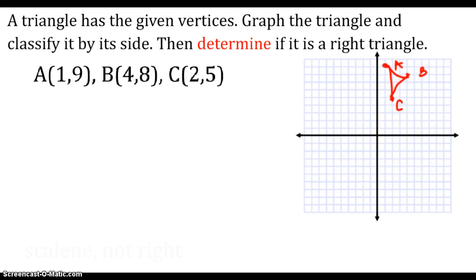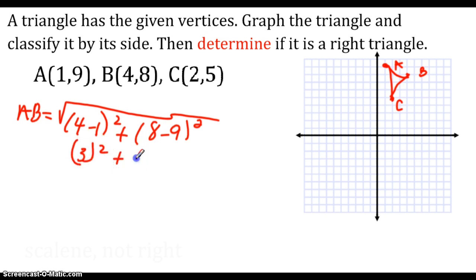Hopefully now you have your formula sheet. So if I'm going to do the distance of AB, I'm going to take 4 minus 1 squared plus 8 minus 9 squared. I'm going to get 3 squared plus negative 1 squared, which gives me 9 plus 1, and the square root of 10, which is approximately 3.2. Then you're going to do that with B and C. Pause the video so you try it on your own.